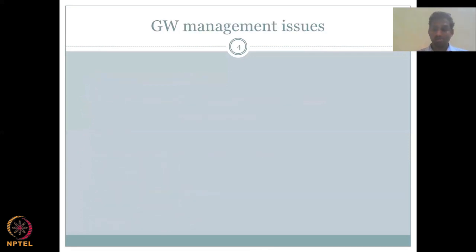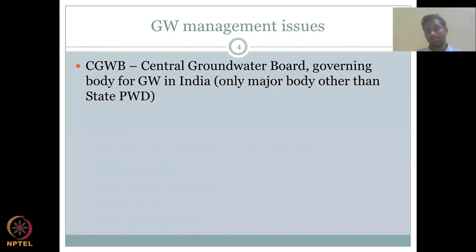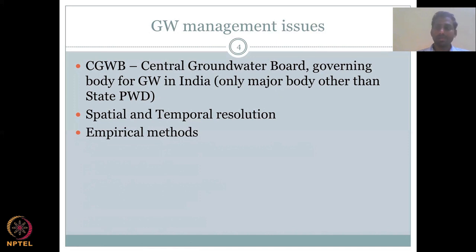One side is groundwater data issues, and the other side is groundwater management issues. Right now we have the Central Groundwater Board along with state PWDs. It would be good to have more agencies involved — for example, the irrigation department looks at water supply for agriculture mostly through surface water like dams and canals, but a large portion of water is also used from groundwater. Some convergence of management could help. Spatial and temporal resolution of management activities should improve. Some empirical methods being used to understand infiltration recharge rates should be backed up with physics-based models.